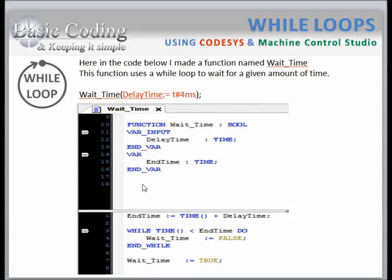This function also has one internal variable of type EndTime. How the function works is simple: EndTime is equal to the current time plus the delay time. The delay time is passed by the user. Let's say the user wants four milliseconds, then the end time is the current time plus four milliseconds. The while loop will look at the current time and see if the current time is less than the end time. If it is, it will continue to loop over this code. The moment the current time is equal to or greater than the end time, it will exit out of the while loop. The function then sets the WaitTime equal to true.